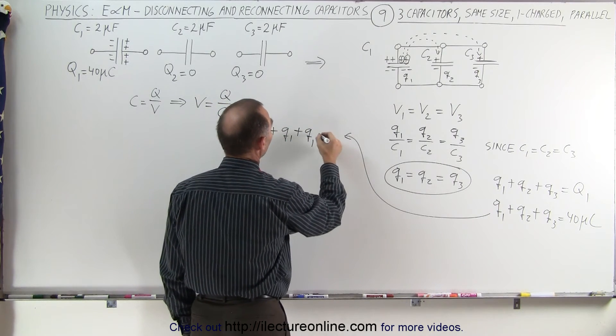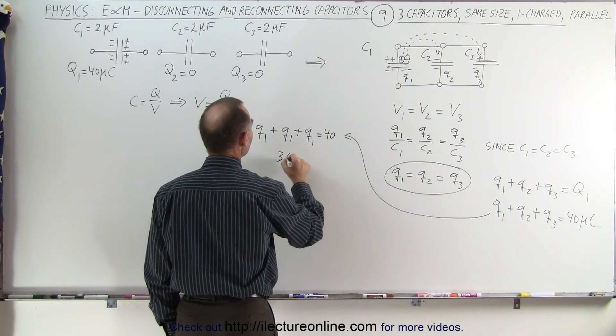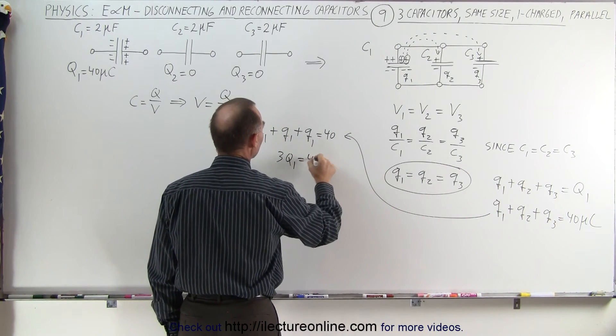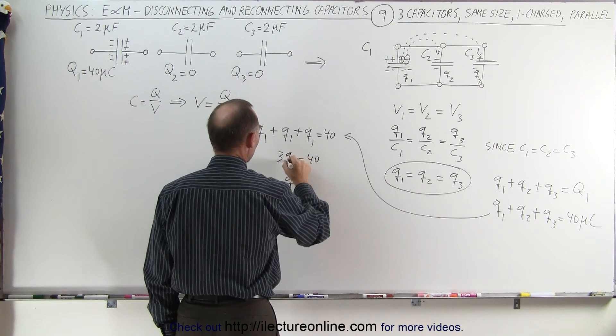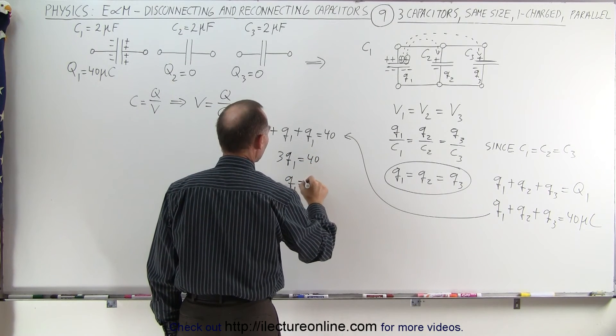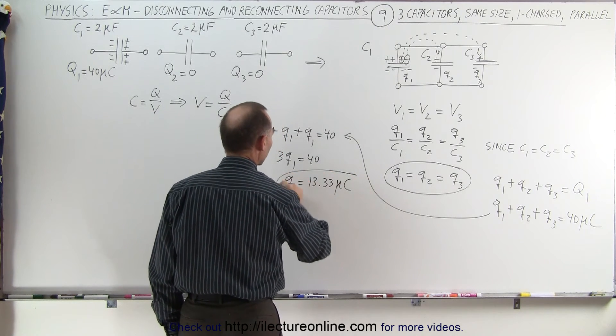Which means 3 times Q1 is equal to 40, and therefore Q1 is equal to 40 divided by 3, which is 13.33 microcoulombs.